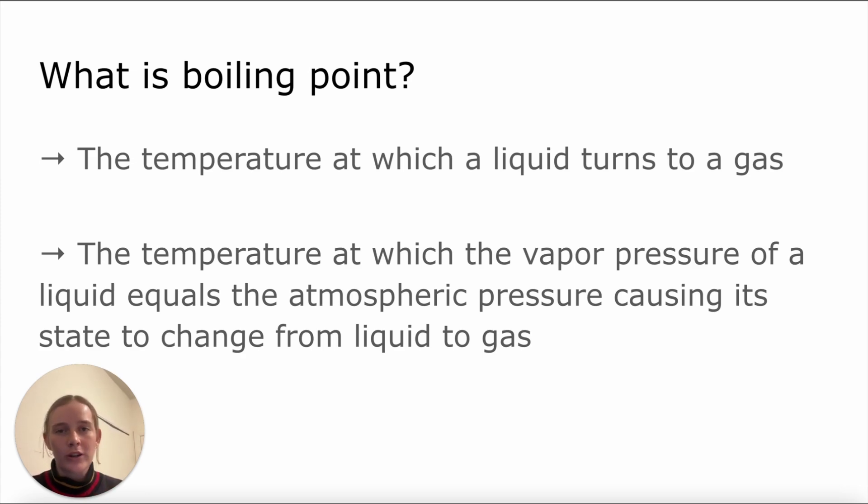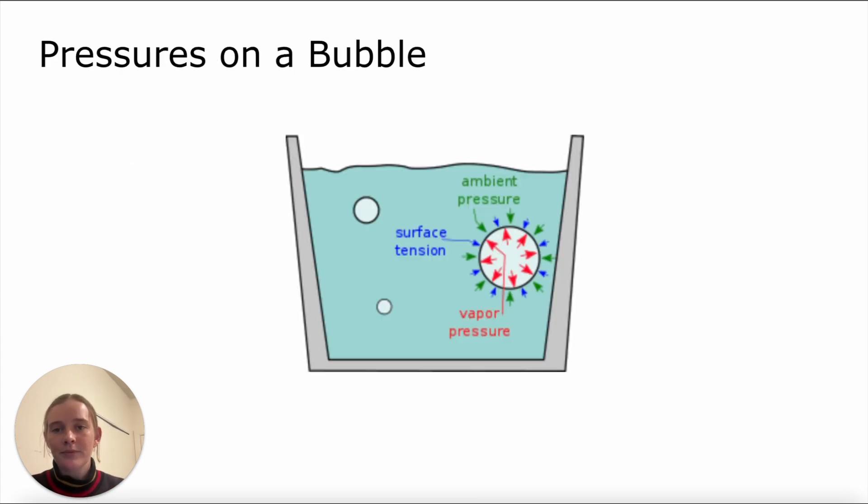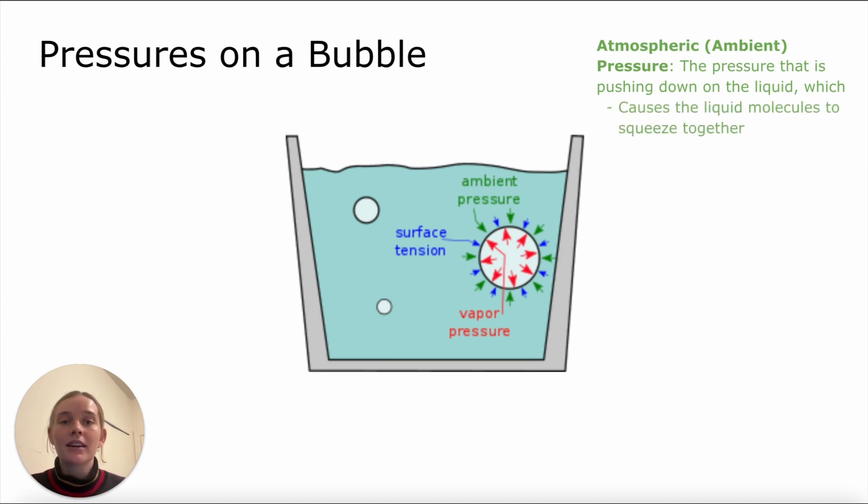We're going to get a little bit more into that as we dive into some of the pressures that I just mentioned. In order to dive into them, we're going to think about these pressures acting upon a single bubble that's forming within a liquid. First, we're going to think about atmospheric, also known as ambient pressure. This is the pressure that is pushing down on the liquid and it causes the liquid molecules to squeeze together and prevents bubbles from forming in the liquid.